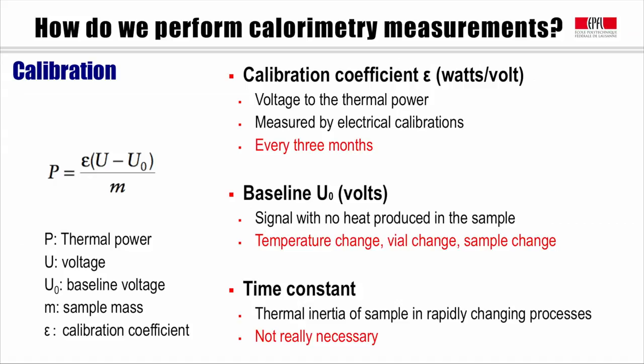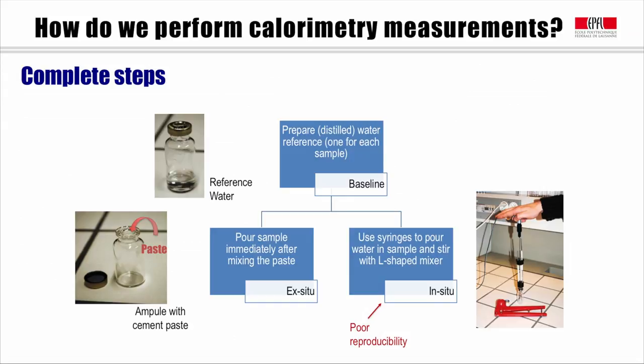A complete isothermal calorimetry measurement is composed of two main steps. First step is preparing the reference and performing a baseline. The second step is casting the specimens and starting the experiment. There are basically two ways for preparing the specimen, so-called ex situ and in situ.